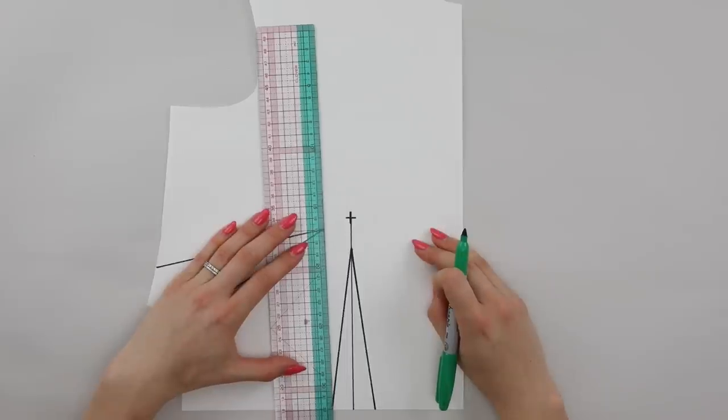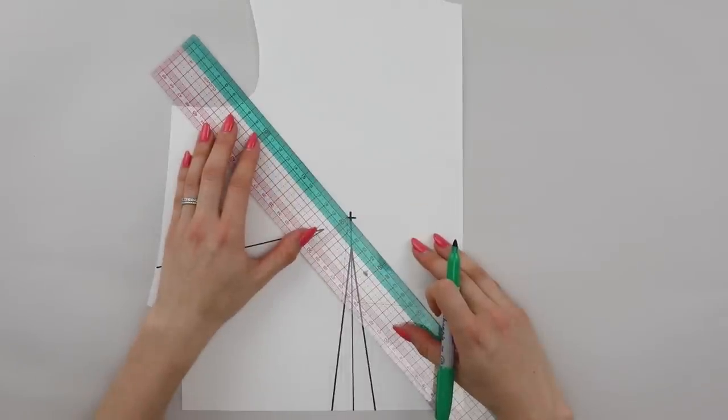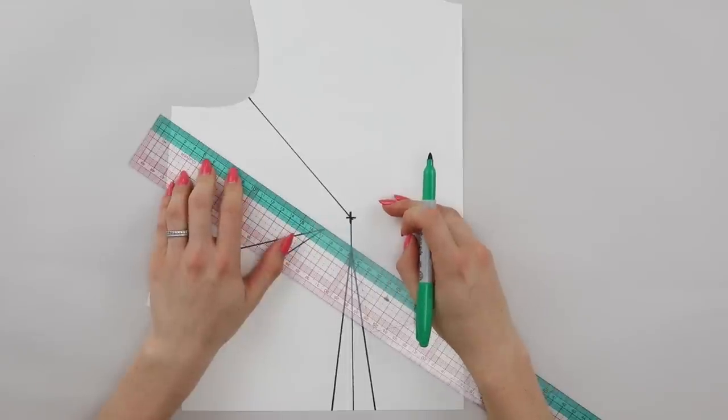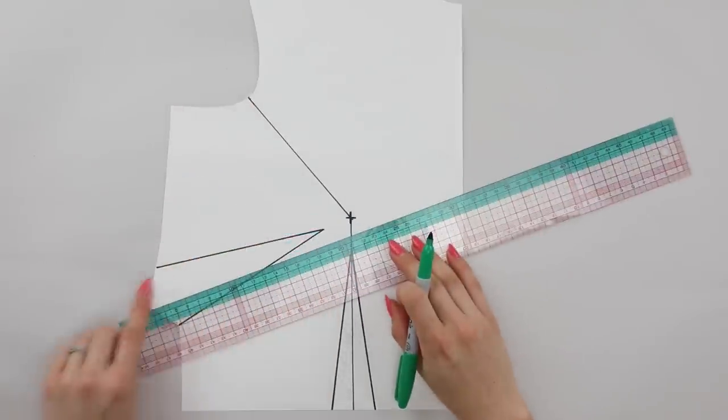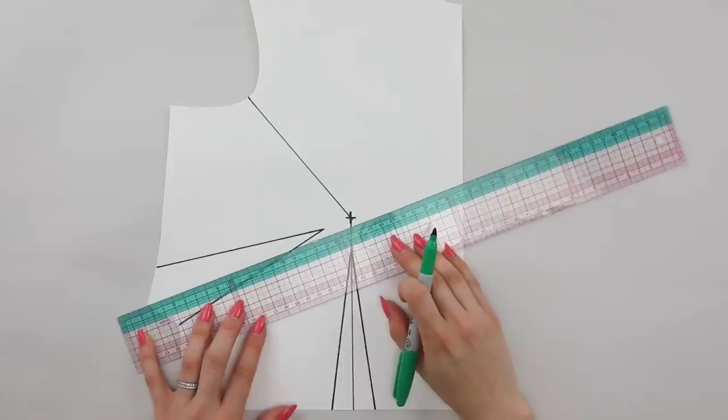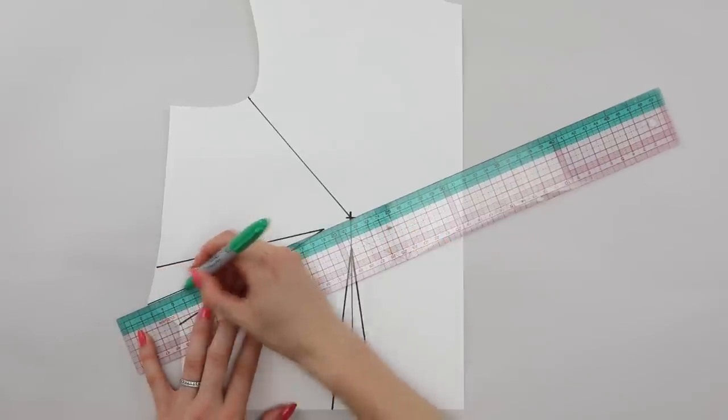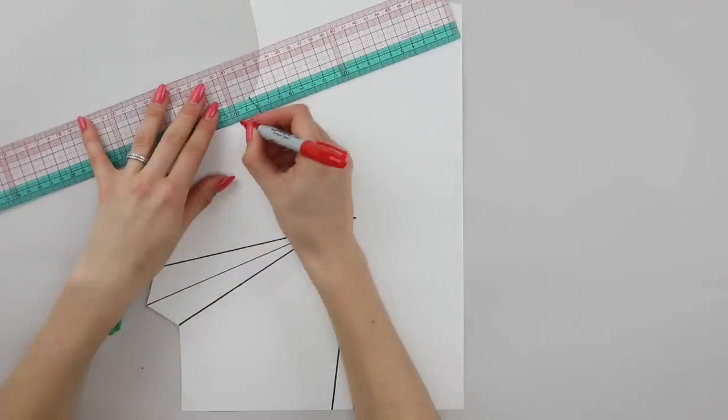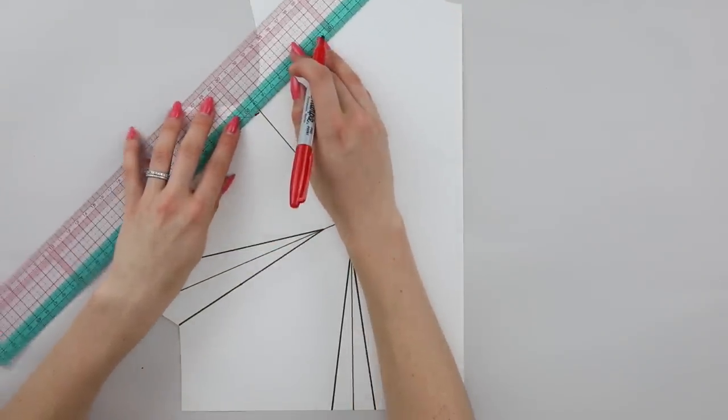You're going to draw a line from the bust apex to the notch at the armhole or to a point that is approximately one third of the armhole, and another line from the center of the side dart through the point to the bust apex. If you have a seam allowance at the armhole, you're also going to want to mark this on.